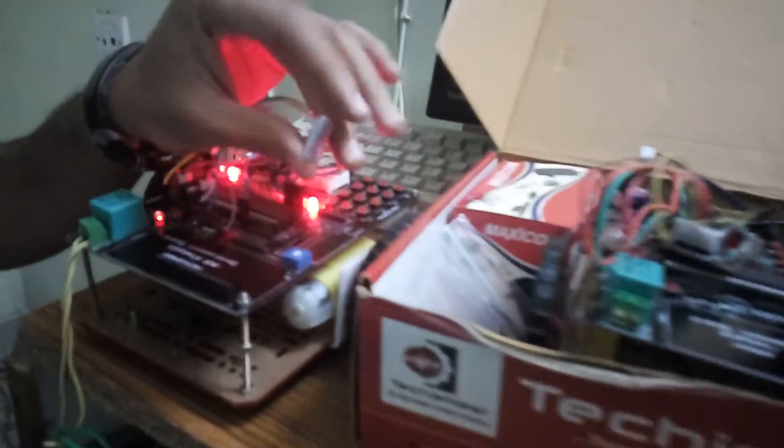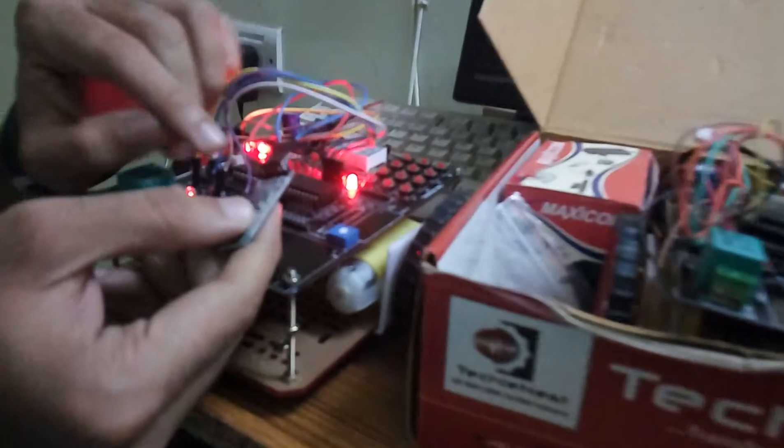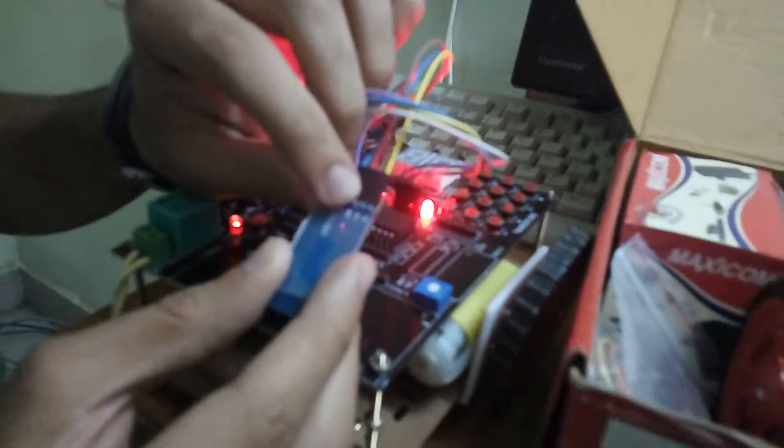This is the Bluetooth device which I have used. It has four pins: one for VCC, one for ground, one for transmitter and one for receiver.